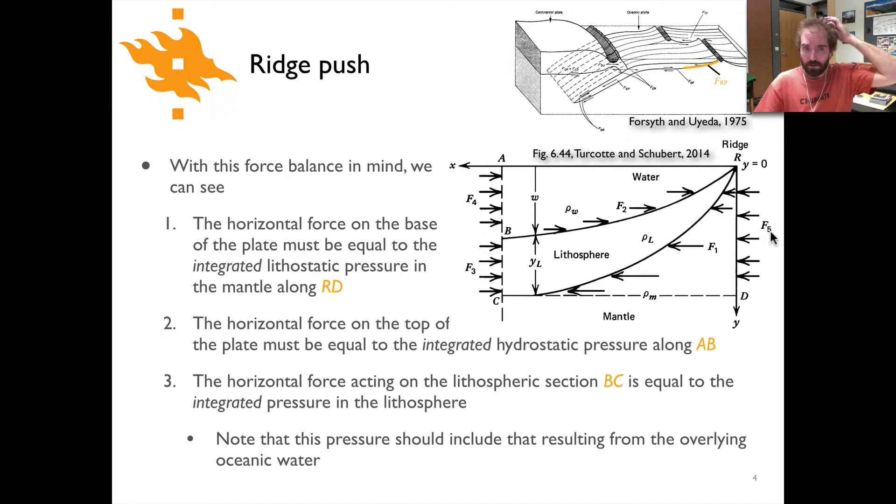What we can say first off is that the horizontal force on the base of the plate, that's f1 that goes along here, that horizontal force has to be equal to the integrated lithostatic pressure in the mantle between the point labeled r at the ridge and d down here at the depth of the base of the lithospheric plate. So if you integrate the pressure along that transect, that force needs to be equal to the force that's acting along the base of the plate, I think that makes a bit of sense.